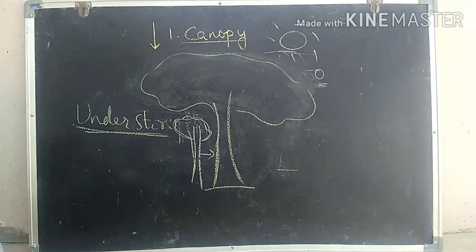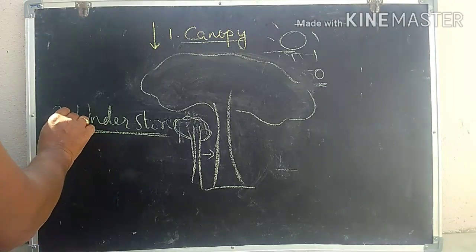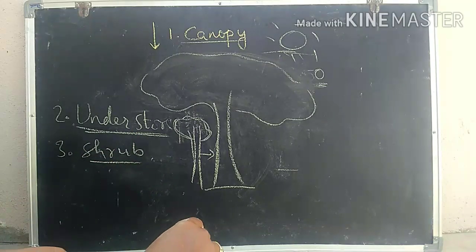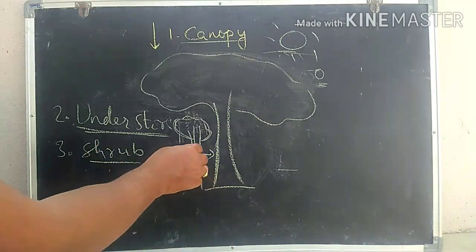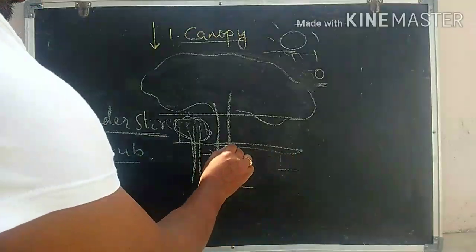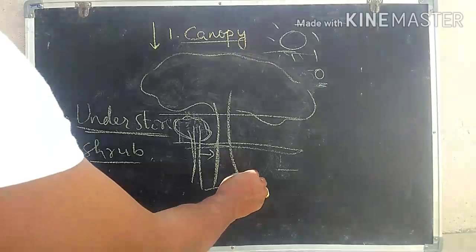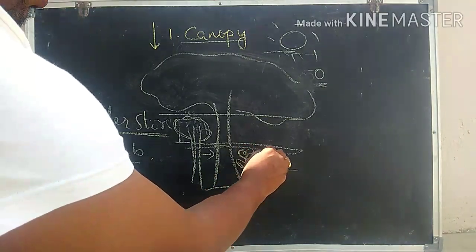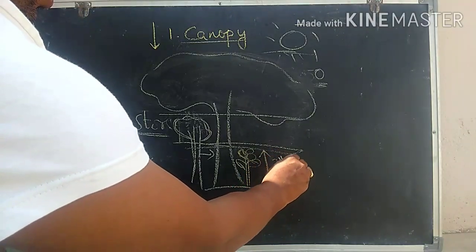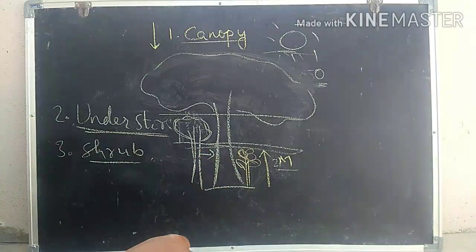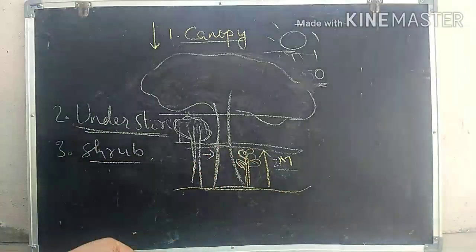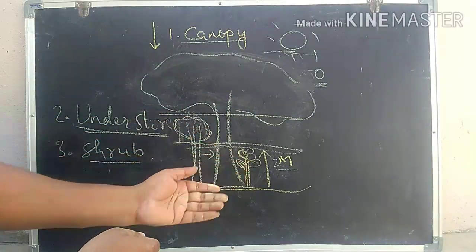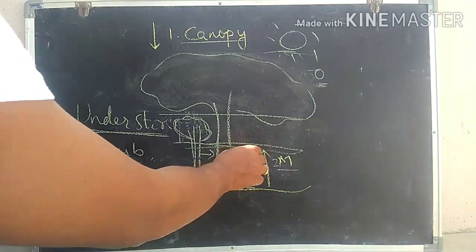The third layer is the shrub layer. The shrub layer is present below the understory. The plants growing here — the shrubs — can grow up to 2 meters in length. This shrub layer receives very less sunlight compared to the canopy and understory regions.